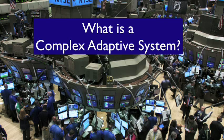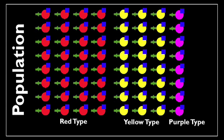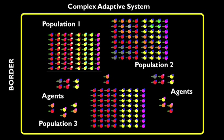Complex adaptive systems are defined as those that have a great number of autonomous adaptive agents or populations of agents that seek to survive and make prediction difficult. Populations are collections of agents and sometimes strategies. Here is a population with three types of agents. Complex adaptive systems such as this one are made of many different agents with many different strategies, or even populations of agents, or combinations of both.